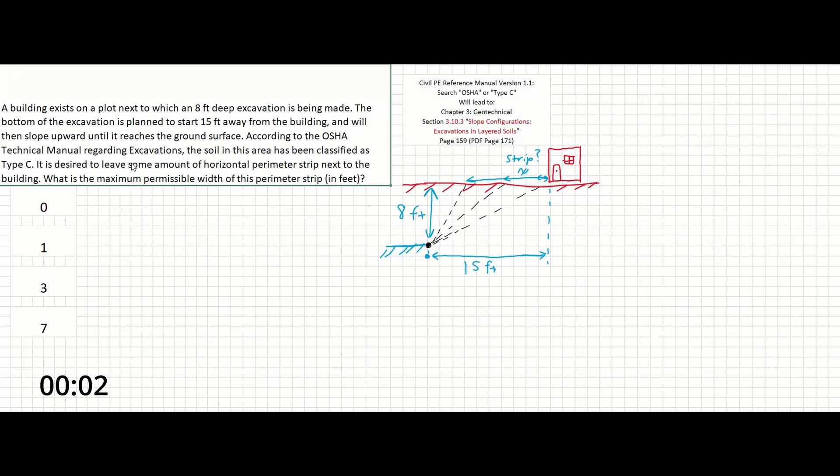In this problem, a building exists on a plot next to which an 8 foot deep excavation is being made. The bottom of the excavation is planned to start 15 feet away from the building and will then slope upward until it reaches the ground surface.